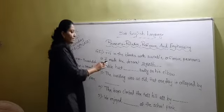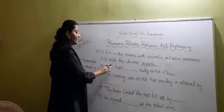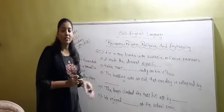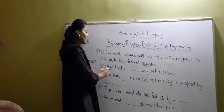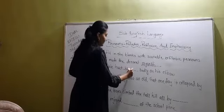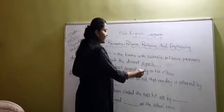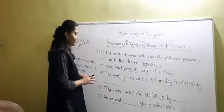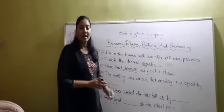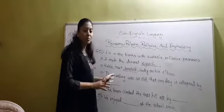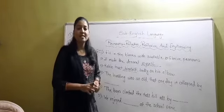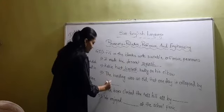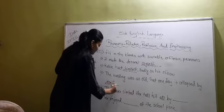Kabir hurt himself badly on his elbow. Kabir is the name of a boy, so the reflexive pronoun we use is 'himself'. Kabir hurt himself badly on his elbow. Third sentence: the building was so old that one day it collapsed by itself. A building is a thing, and for things we use 'itself'.